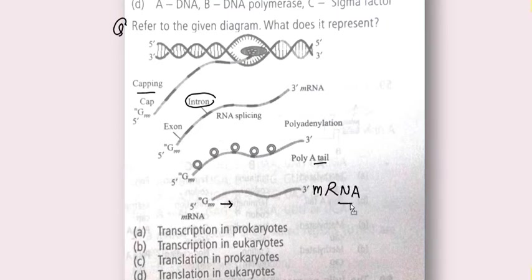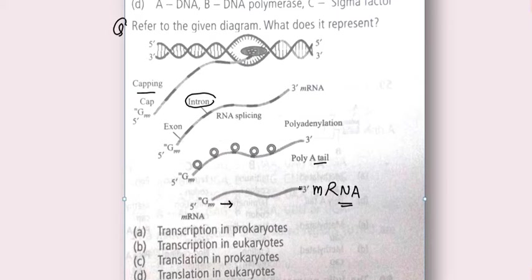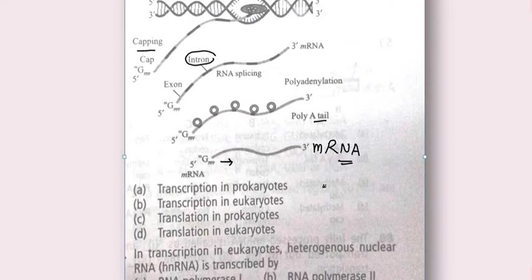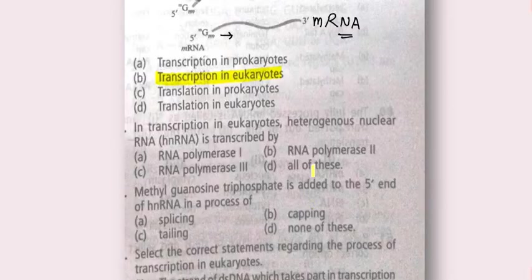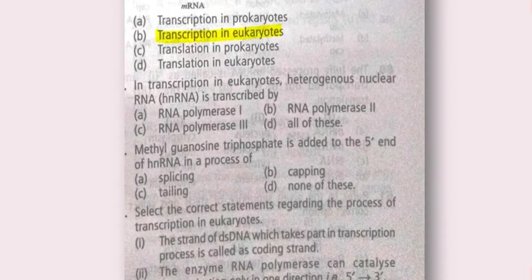As we discussed, hnRNA is present in the nucleus of the cell and has to be processed. During processing, splicing, capping, and tailing take place. After that, the mRNA is formed and transported to the cytoplasm. This represents transcription in eukaryotes.